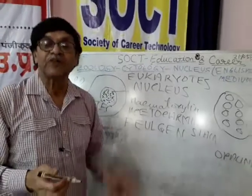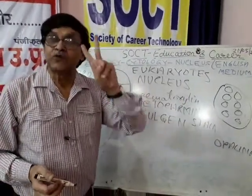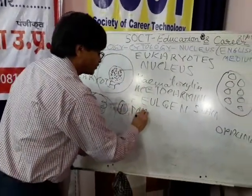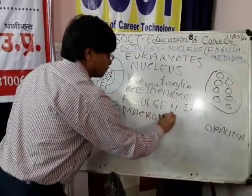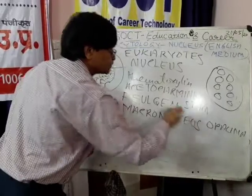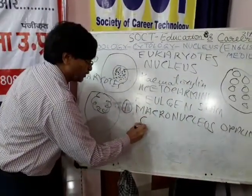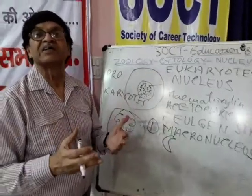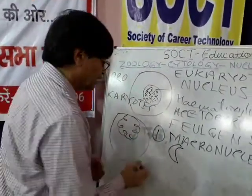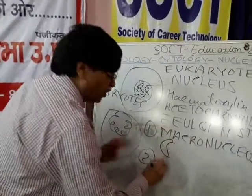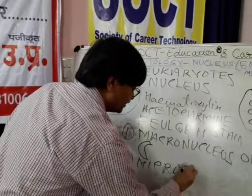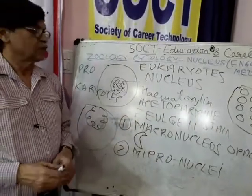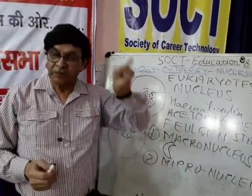But still there is one more situation where the nuclei are of two types. One is a larger macronucleus, which is generally kidney-shaped and vegetative in nature — it does not take part in cell reproduction. Another type of nuclei are smaller, called micronuclei. For example, in the case of Paramecium, we get one macronucleus.